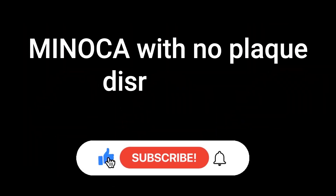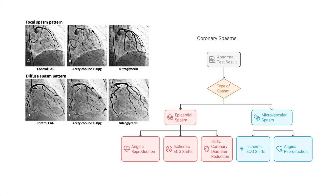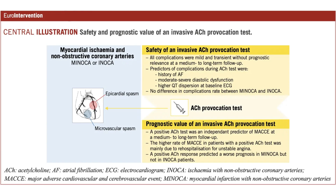What if we perform OCT and don't find plaque disruptions? We can then consider provocative testing by injecting acetylcholine, which can reveal the classic response of epicardial spasm or microvascular spasm. Classically, we perform provocative testing a few weeks after the acute MI, but some studies have shown the safety of performing the test within 48 hours of diagnosis — with adverse event rates similar to non-emergency cases. So provocative testing can be performed in MINOCA patients and will reveal some cases of coronary spasm.